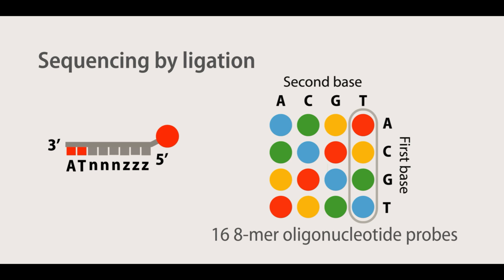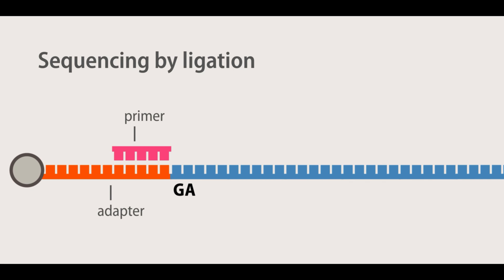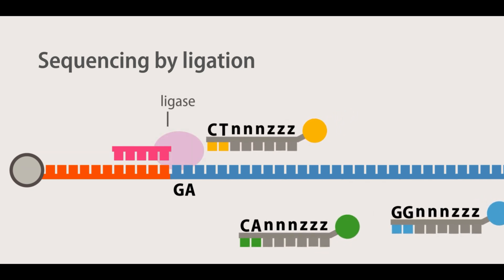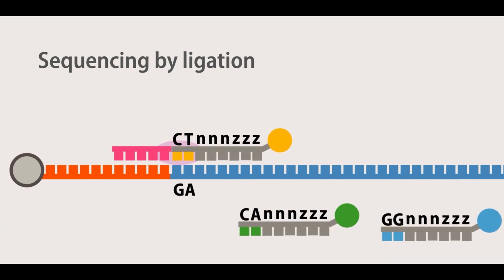Each eight-mer consists of two probe-specific bases, and six degenerate bases. The sequencing reaction commences by binding of the primer to the adapter sequence, and then hybridization of the appropriate probe. This hybridization of the probe is guided by the two probe-specific bases, and upon annealing, is ligated to the primer sequence through a DNA ligase.